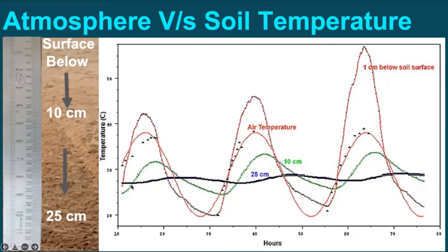At 25 cm, that is the black line, it is almost straight, meaning there is no effect of air temperature on the soil temperature. But why is that so? Let us try to understand this through a practical example.